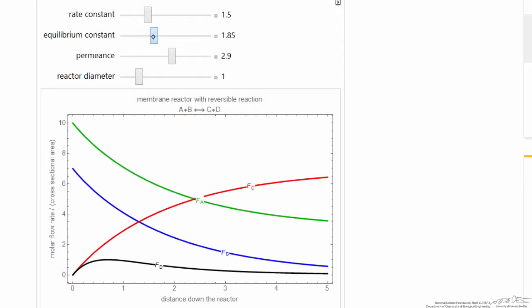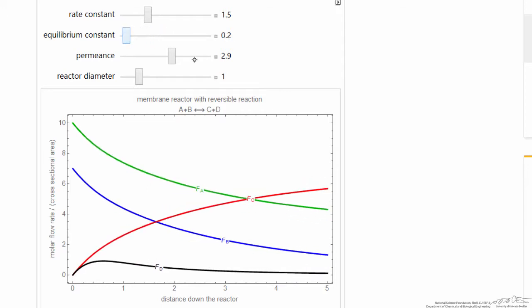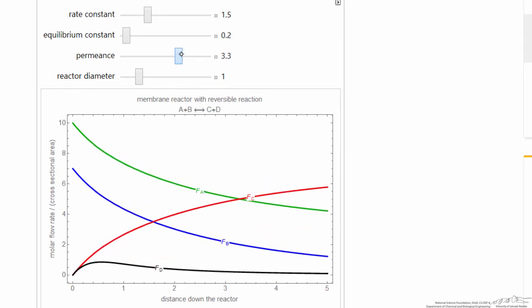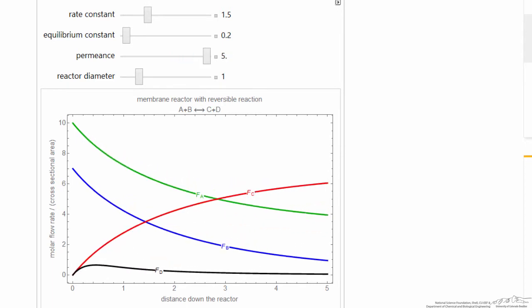If I decrease the equilibrium constant, then you can see increasing the flow rate of D through the membrane by increasing the permeance has a pretty big effect on the flow rate of C.